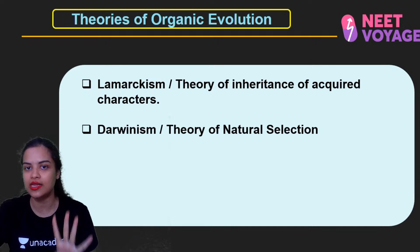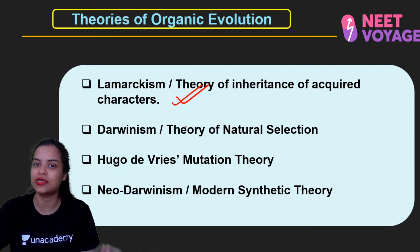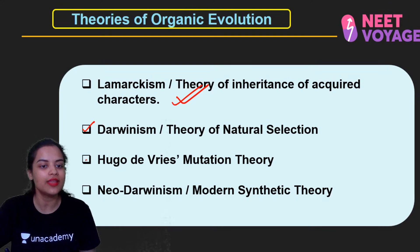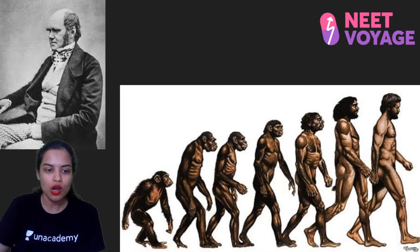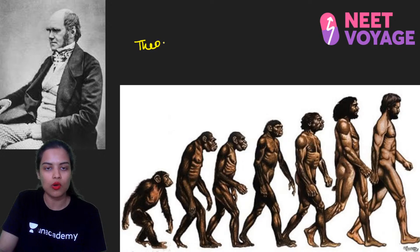Let's start with Darwinism. Yesterday I told you there are four theories of organic evolution: Lamarckism — which we discussed — Darwinism, which we discuss today as the theory of natural selection, and then mutation theory and neo-Darwinism, which is the modern synthetic theory. Darwin gave a theory of natural selection. We call it the theory of natural selection because nature tends to select those organisms or individuals who are the fittest.